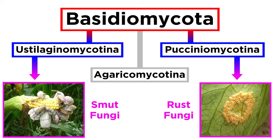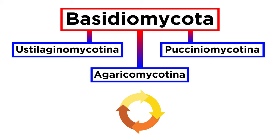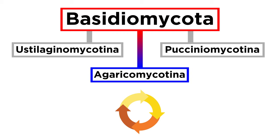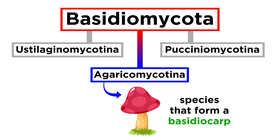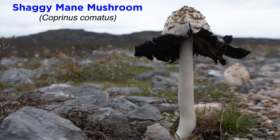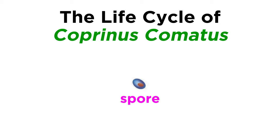In the previous tutorial, we discussed the life cycle of the rust and smut fungi. Now we are going to introduce the general life cycle of other fungi within the phylum Basidiomycota, specifically the mushrooms that fall into the third subphylum, Agaricomycotina. These fungi primarily include mushroom or basidiocarp forming species. For example, here is the shaggy mane mushroom, or Coprinus comatus, a mushroom that has a well-studied life cycle.